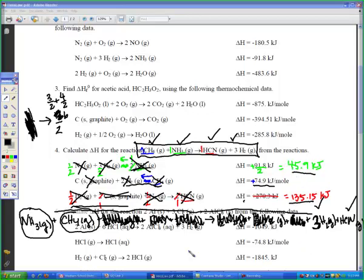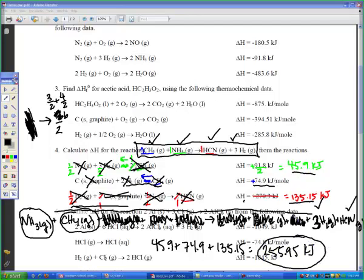So I'm literally going to take 45.9 plus 74.9 plus 135.15. And there's no negatives there, so it's all positive, which is nice. So if I add all those up together, 74.9 and 45.9 and 135.15, I get 255.95 kilojoules, which should be our final answer. So just literally adding these all up now that I've verified that my equation was correct.